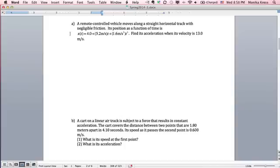So in the first question, this is a remote-controlled vehicle that moves along a straight horizontal track, and its position as a function of time is given by a function that depends on t and also t cubed. So we definitely do not have constant acceleration in this problem, which means we have to use the definition of velocity, which is dx/dt.